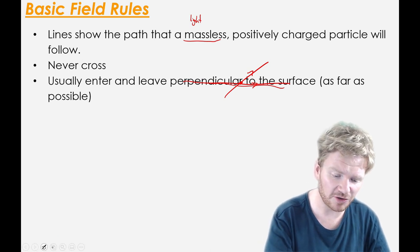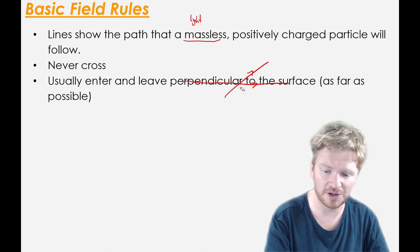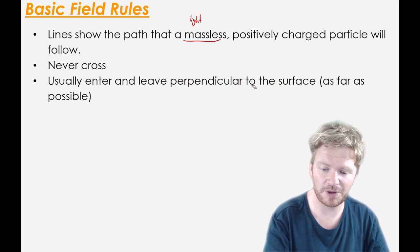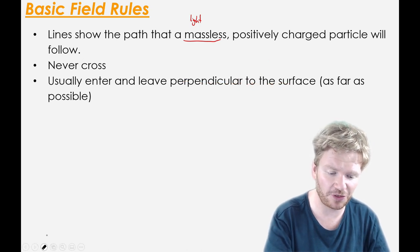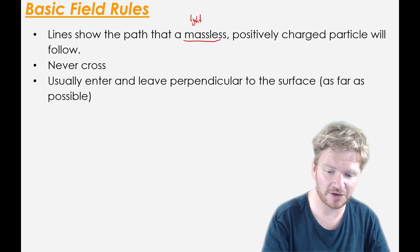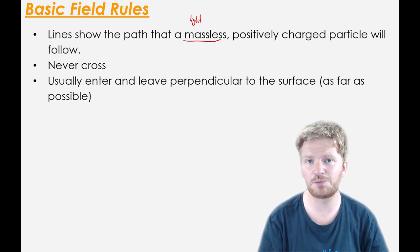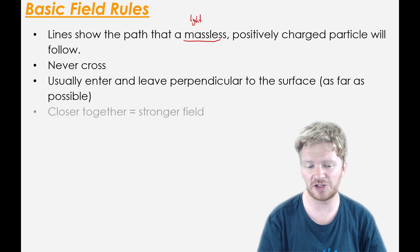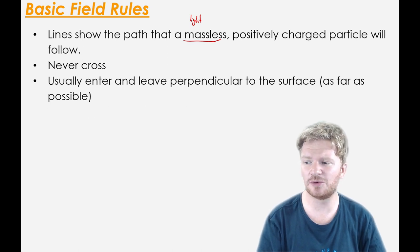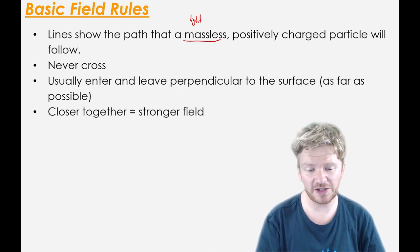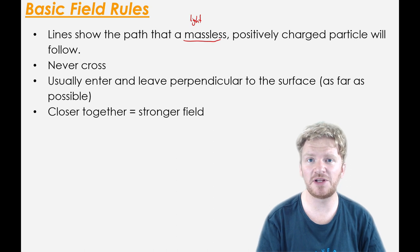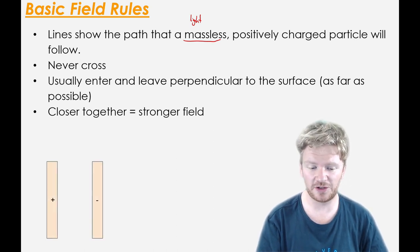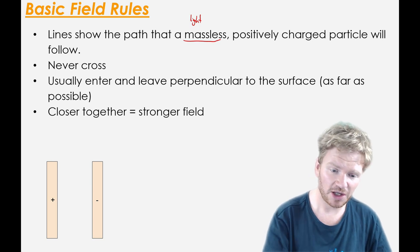This isn't a hard and fast rule — you'll see examples where it doesn't happen — but it's often easiest to think of the rule being that field lines usually enter and leave perpendicular to the surface that is producing them, because that makes it a little bit easier to understand. Qualitatively, the closer the field lines are, the stronger the field is.